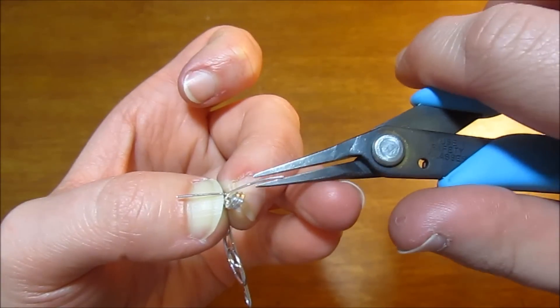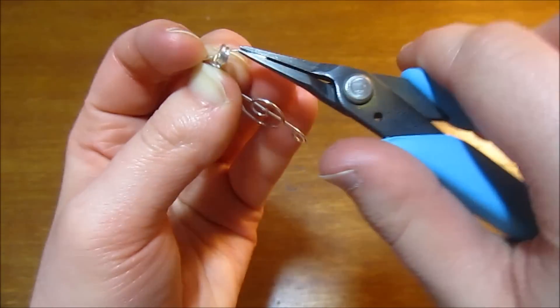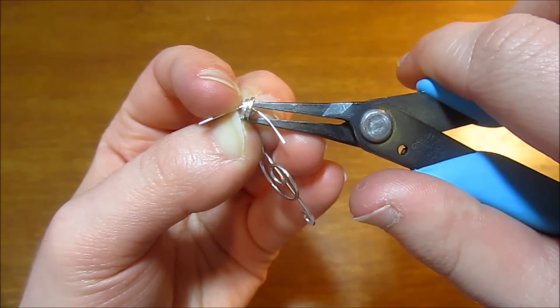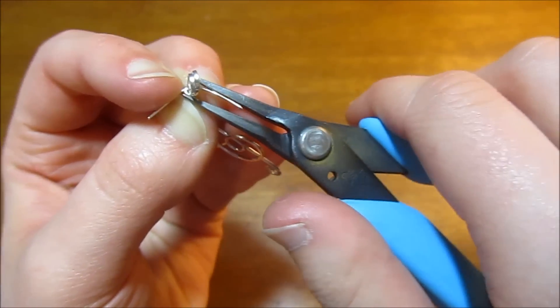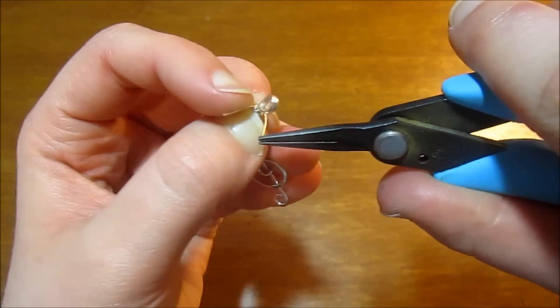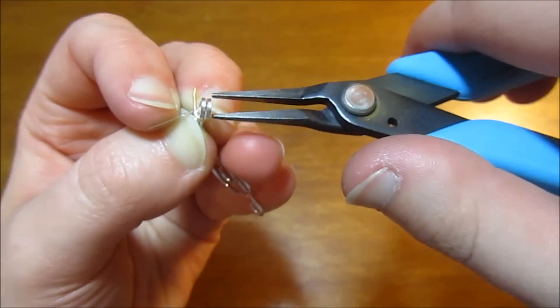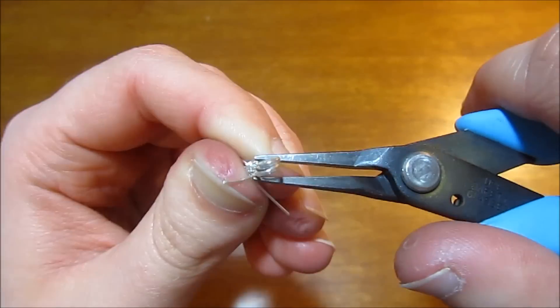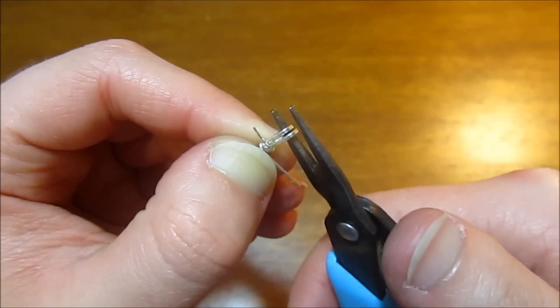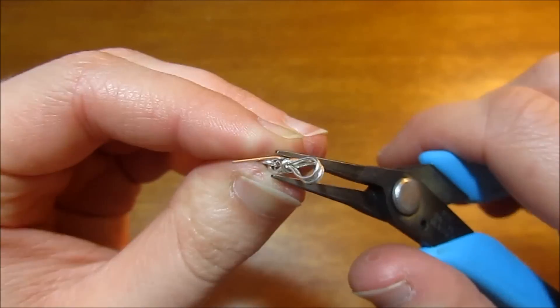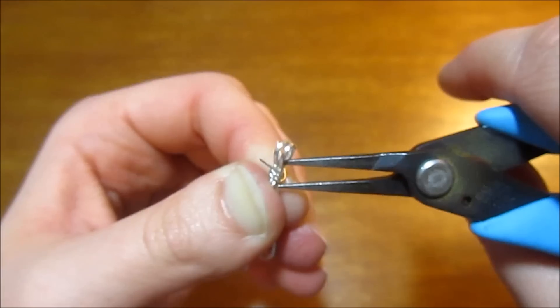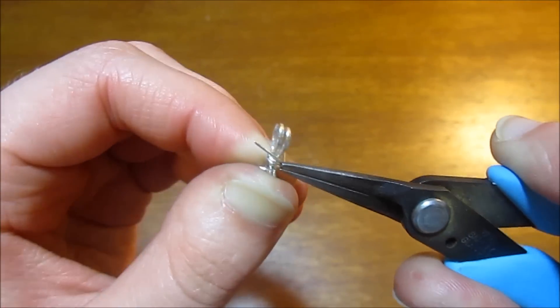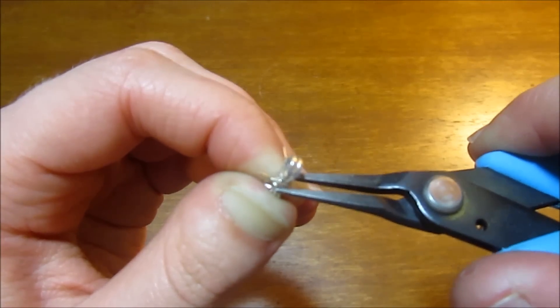I'm just using my chain nose pliers to continue wrapping and snugging this around as much as possible. Once you get it kind of attached, you can just grab the tail and start twisting it around, and of course tightening as you go. Each loop you do around these bails, you want to make sure that your new wrap lies flush with your previous wrap.